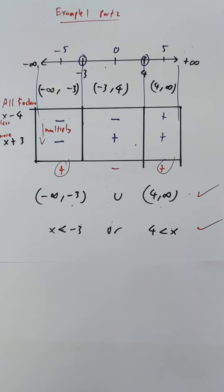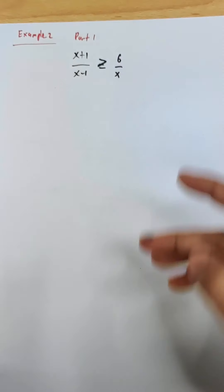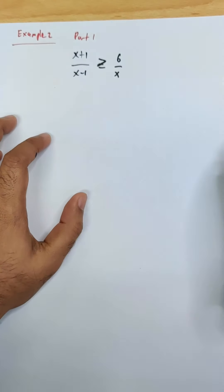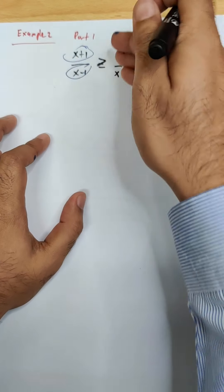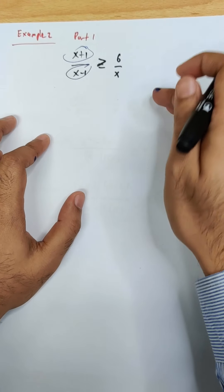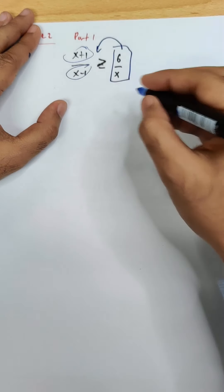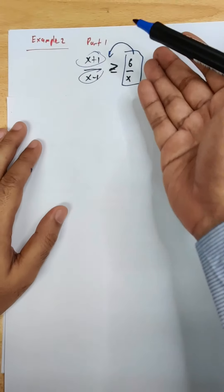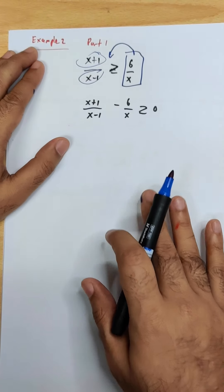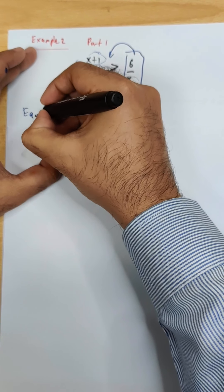Let's look at a second example. It has the same structure — x in the numerator and x in the denominator — but there are more x terms on the right side. As before, transfer everything to the left side to get the right-hand side equal to zero, then equalize the denominator and simplify.